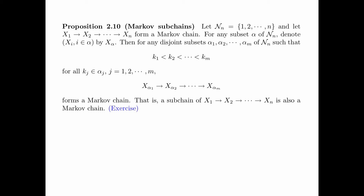Proposition 2.10 is about Markov subchains. This proposition looks a little complicated, but in fact the idea is very simple. Let N_n be the index set containing the integers 1, 2, ..., n, and let x1, x2, ..., xn form a Markov chain. For any subset alpha of the index set, denote the collection of random variables xi, i in alpha, by x_alpha. Then, for any disjoint subsets alpha_1, alpha_2, ..., alpha_m of the index set such that k1 < k2 < ... < km for all kj in alpha_j, j = 1, 2, ..., m, we have the Markov chain x_{alpha_1}, x_{alpha_2}, ..., x_{alpha_m}. That is, a subchain of x1, x2, ..., xn is also a Markov chain. We leave the proof of this proposition as an exercise.